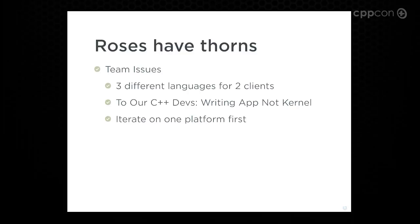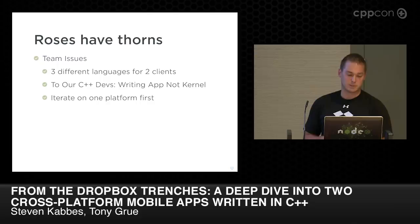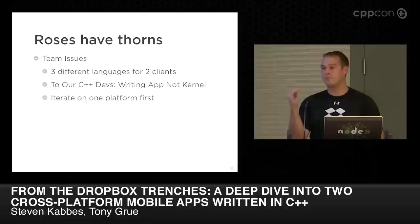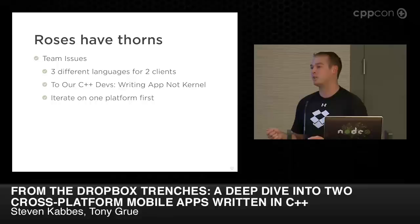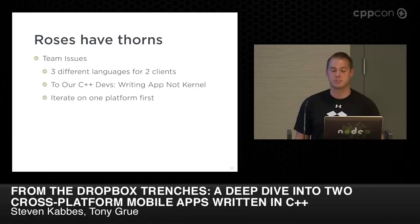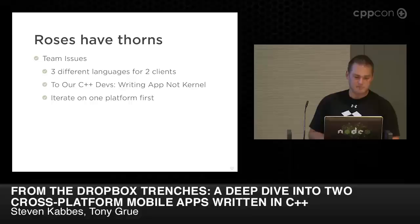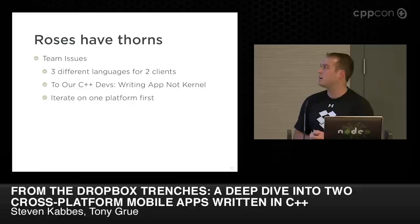More of the softer issues: three different languages for two different clients just seems like a terrible thing. And our C++ developers — this is actually kind of interesting — as soon as you get some application developers writing in C++, they start to worry about every single instruction. It's like a weird thing: because you're writing C++, it needs to be so fast. But for the majority of the applications we're using it for, it just doesn't matter. So it's hard to stay productive unless you address this from the start.